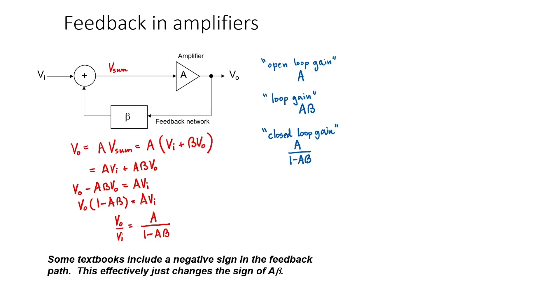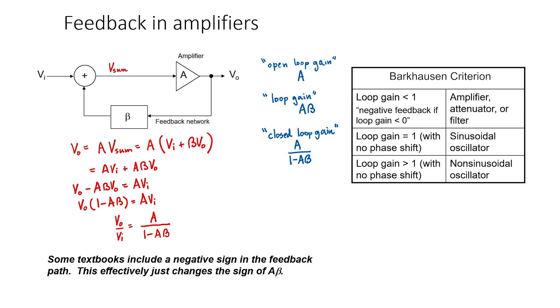The size and sign of the loop gain determine the functionality of the particular circuit. The Berkhausen criterion helps us determine what type of circuit we're dealing with. If the loop gain is smaller than 1, then we're dealing with an amplifier, an attenuator, or a filter.